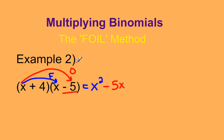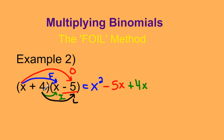The I in FOIL stands for inside, so we look at our two inside terms: 4 times x gives us 4x. The L in FOIL stands for last — first, outside, inside, last — so we look at the two last terms, which is 4 times negative 5. We have a negative times a positive, so we end up with a negative, and it's 20.